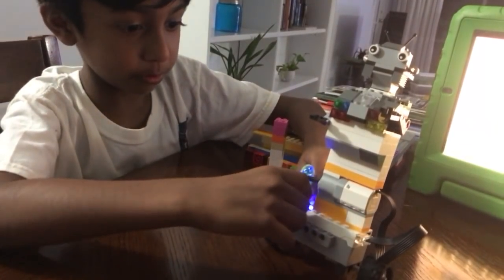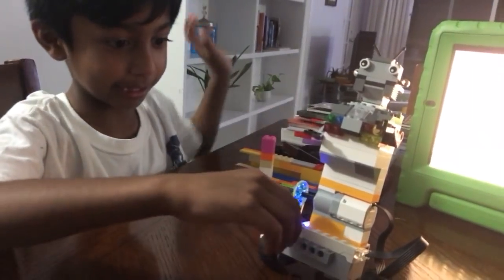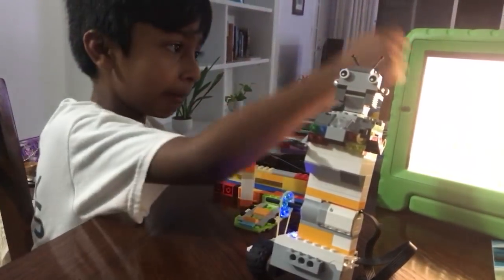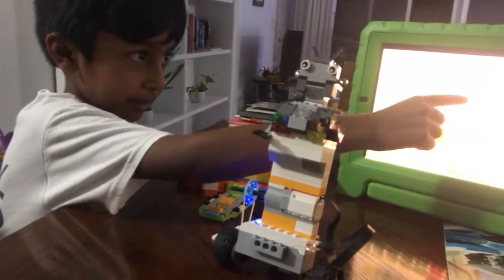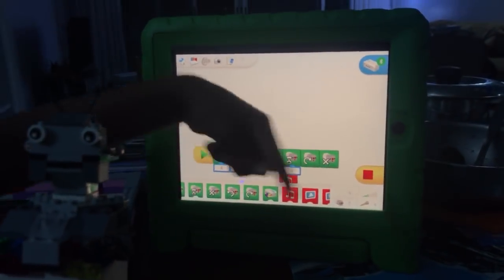So this is his Bluetooth smart hub. Right here you can see the blue glowing, so that's how you know it's Bluetooth. And it's connected to the iPad here. You can see it's on because of the green light there. See? It's exactly the same.